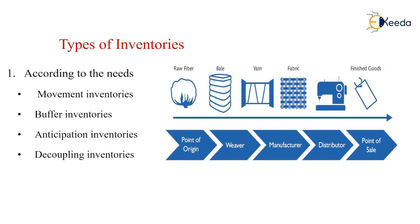For example, if you see the example of the textile market of cotton, then initially we need to have the raw fiber or the cotton — the raw cottons inventory — then we should have the bale of cottons which are the present inventory. The bale is converted into yarn, then spun into fabric, and then sewed into finished goods from the distributor to the point of sale. All these processes occur at different production stages: the point of origin, the weaver, the manufacturer, the distributor, and the point of sale.